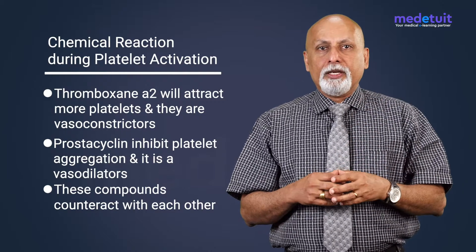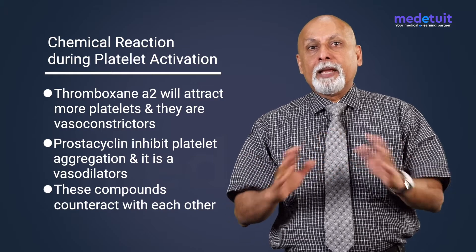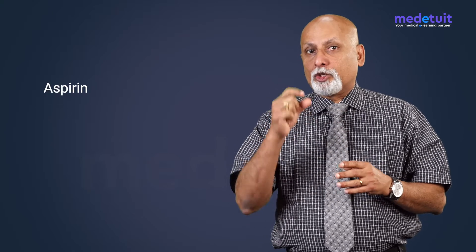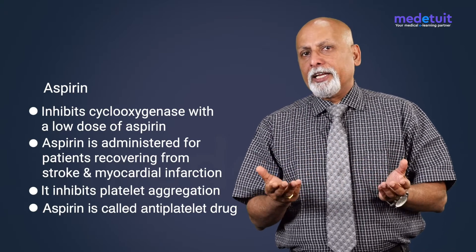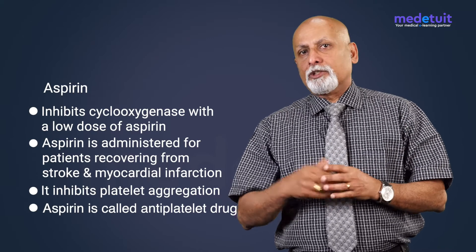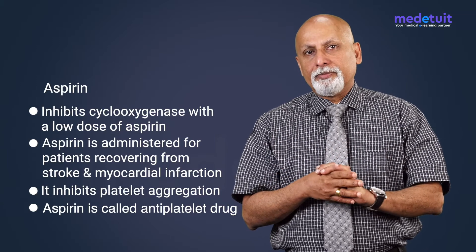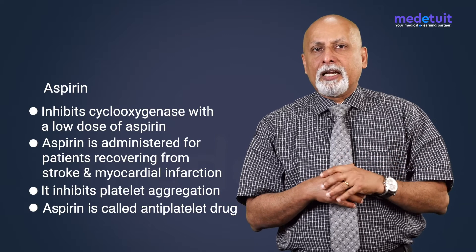Thromboxane A2 attracts more platelets and is a vasoconstrictor, whereas prostacycline is a vasodilator and inhibits platelet aggregation — they counteract each other. When we inhibit cyclooxygenase with a low dose of aspirin, a drug prescribed for thinning the blood or preventing clots, it is especially used in patients recovering from stroke as well as myocardial infarction. Aspirin, by inhibiting cyclooxygenase, inhibits platelet aggregation.